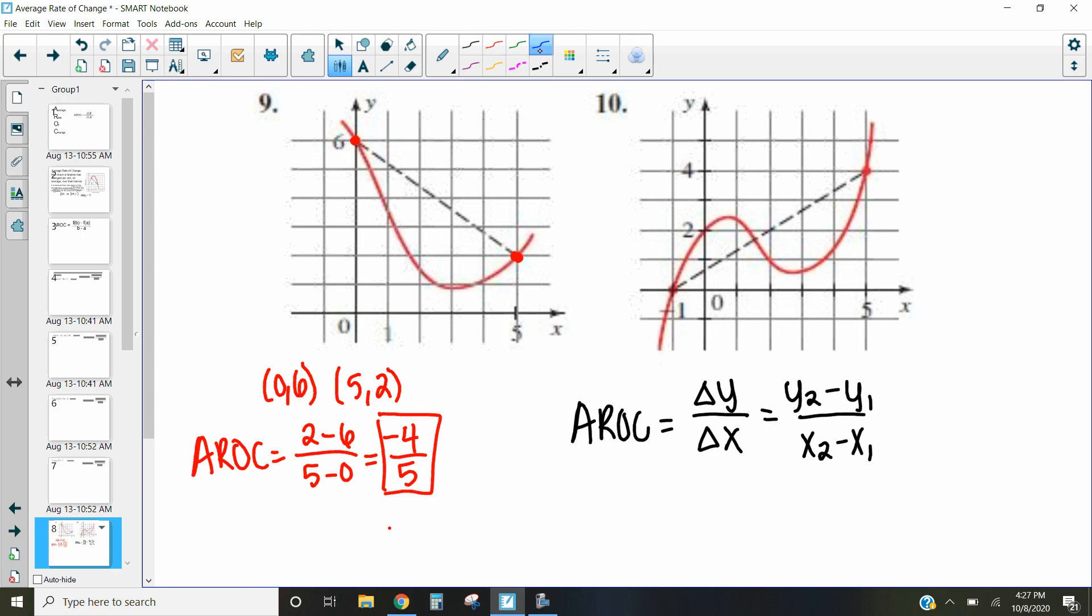doing our other method, which is just counting. So right here, we go down 4 and over 5. And remember slope is rise over run. And so that's how we end up getting that negative 4 fifths as well, is we went down 4 over 5.